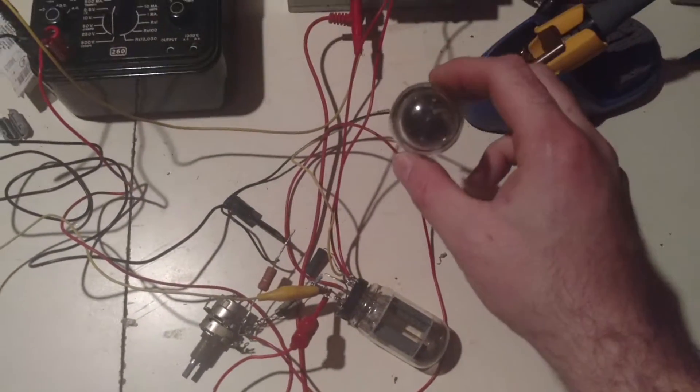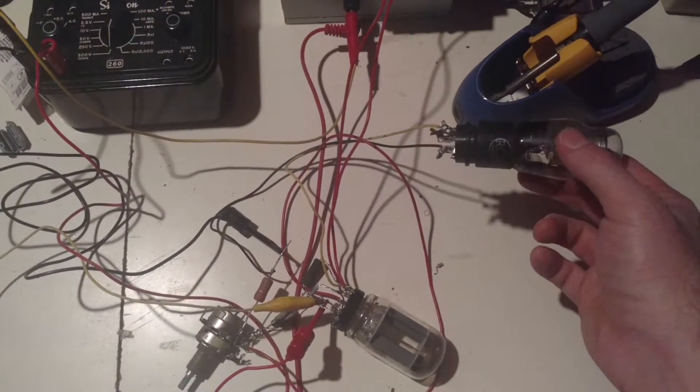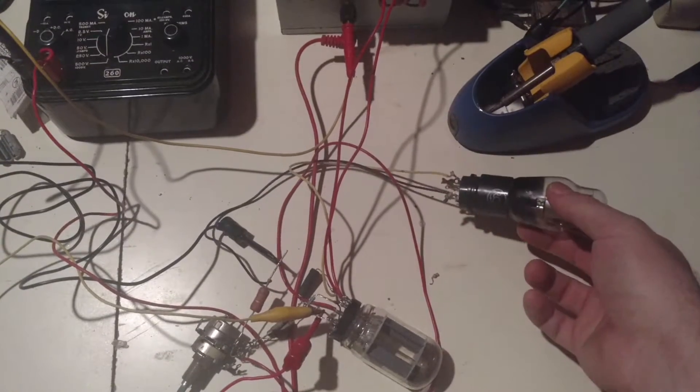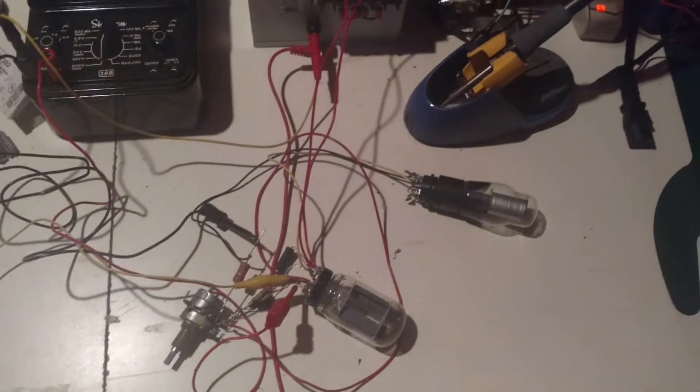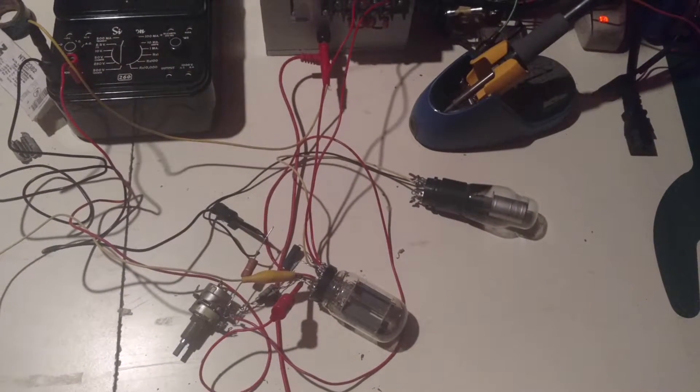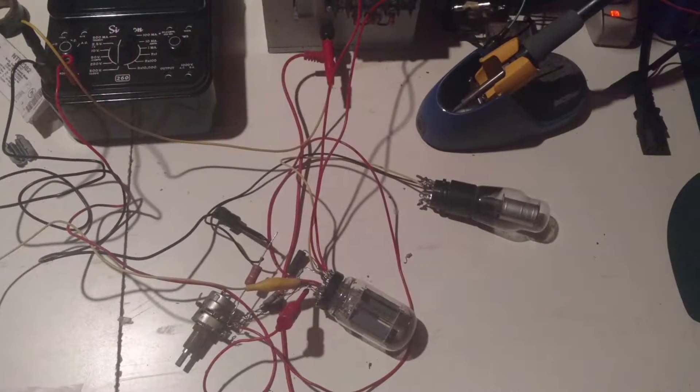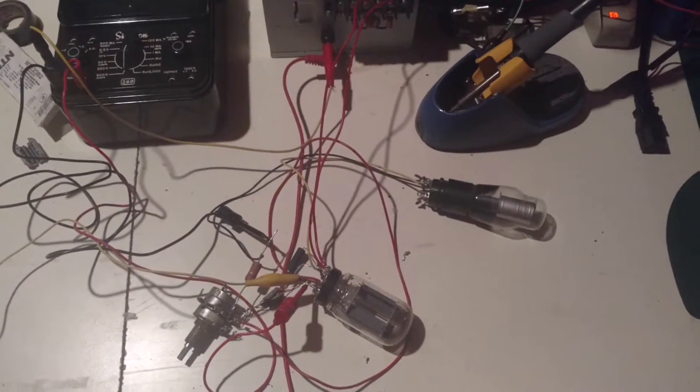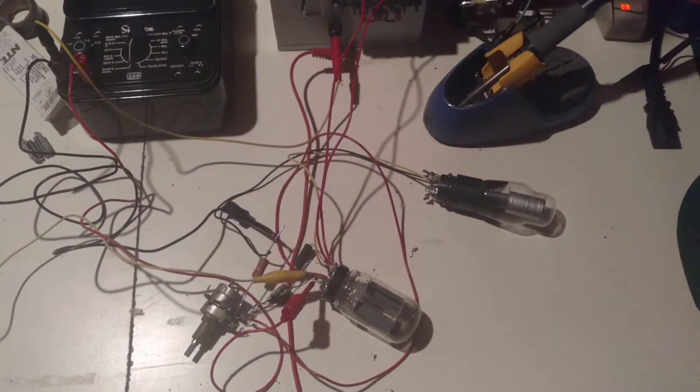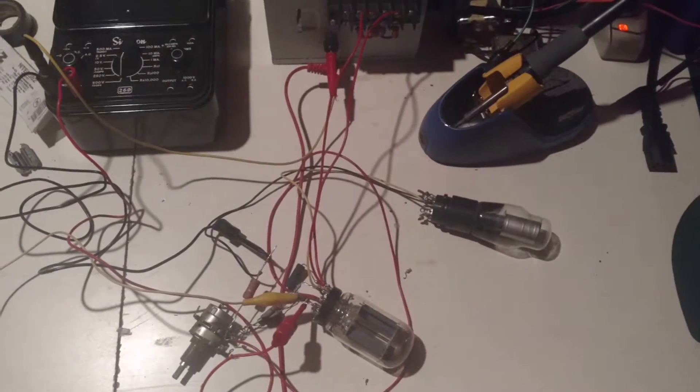First off we have the 0D3 regulator. This is a gas-filled regulator. It's kind of like an NE2 bulb except it kicks on at about 150 volts. If you want to talk about it in a modern sense, you would think zener diode or something like that. It's going to kick on and conduct current whenever you actually have a voltage above what it's supposed to be.